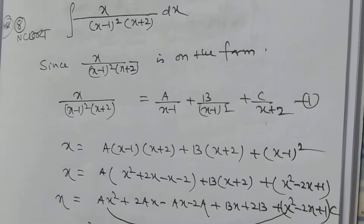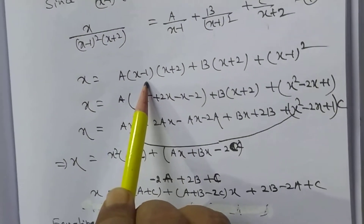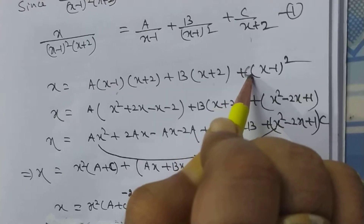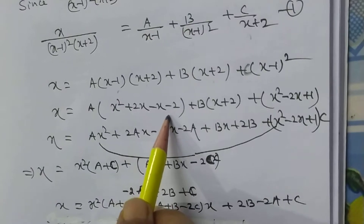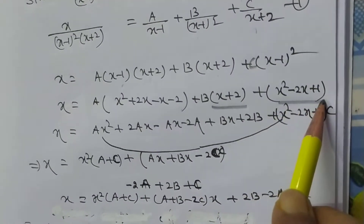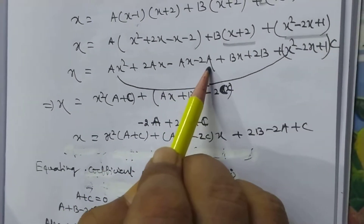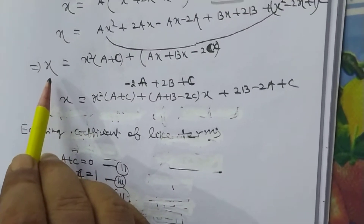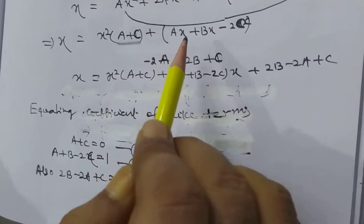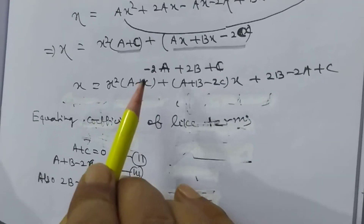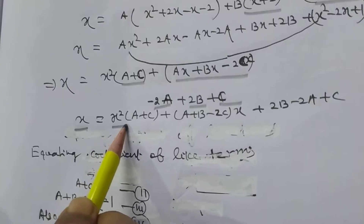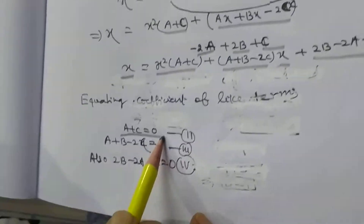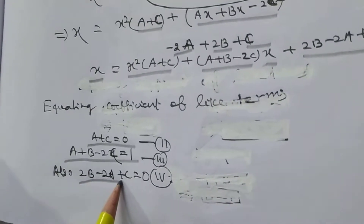Now we can write x in this form. After simplification, we have a(x - 1)(x + 2) + b(x + 2) + c(x - 1)². Expanding: a(x² + 2x - x - 2) + bx + 2b + c(x² - 2x + 1). Taking a: ax² + 2ax - ax - 2a + bx + 2b + cx² - 2cx + c. By comparing coefficients of like terms: coefficient of x² gives a + c, coefficient of x gives a + b - 2c = 1, and constant gives 2b - 2a + c = 0.